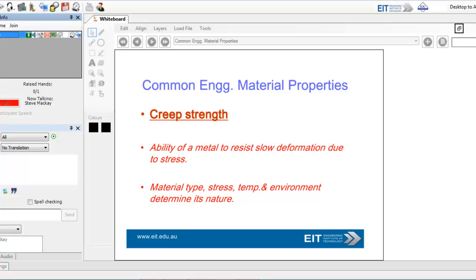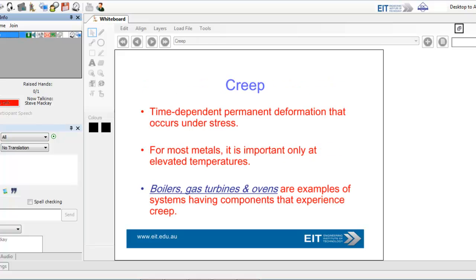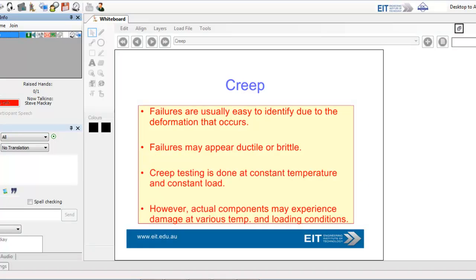Creep strength is ability of the metal to resist slow deformation. Time-dependent thermal deformation. Good examples of systems here: boilers, gas turbines, and ovens.